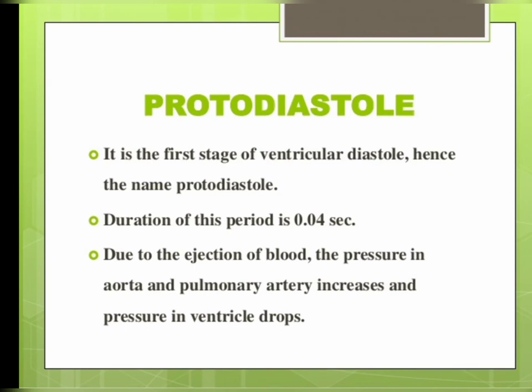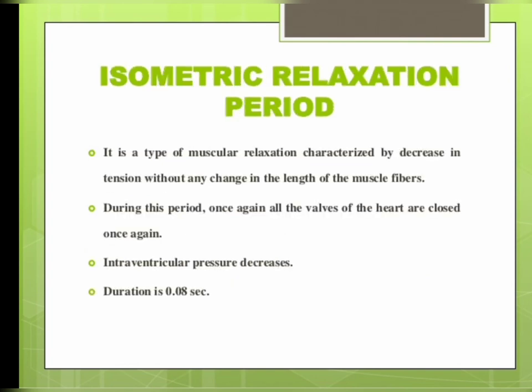The next is protodiastole — the first stage of ventricular diastole — with a duration of 0.04 second. Due to ejection of blood, the pressure in the aorta and pulmonary artery increases and pressure in the ventricles drops. The next is isometric relaxation period, a type of muscular relaxation with a decrease in tension without any change in the length of the muscle fiber. During this period all heart valves are closed and intraventricular pressure decreases, with a duration of 0.08 second.